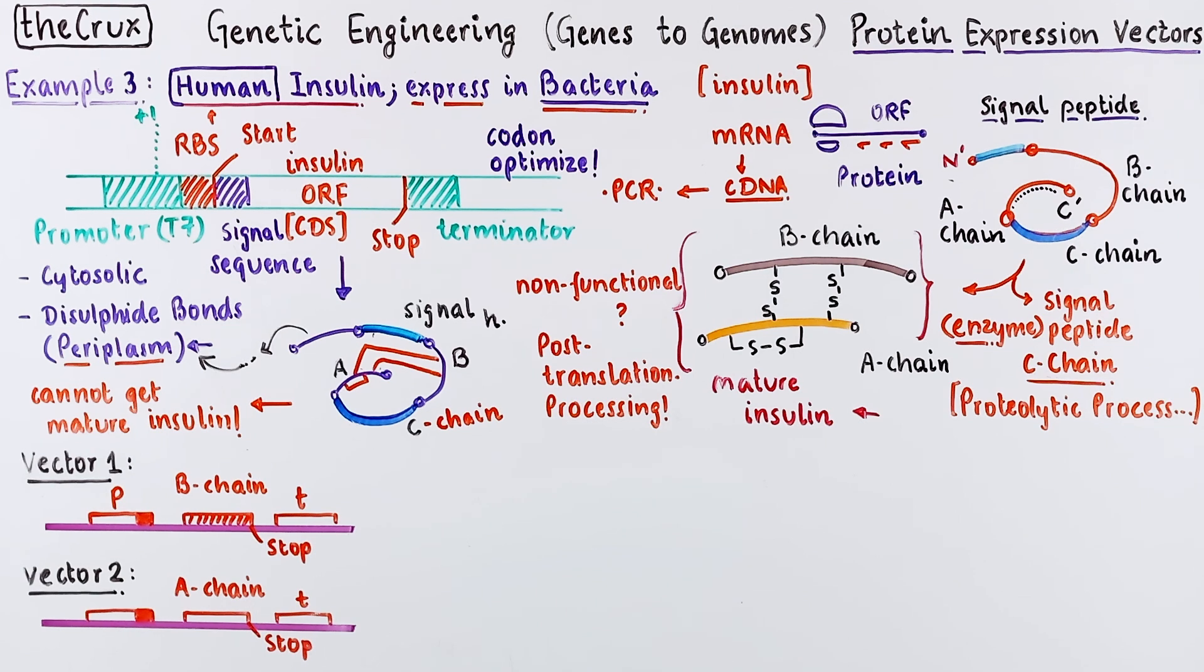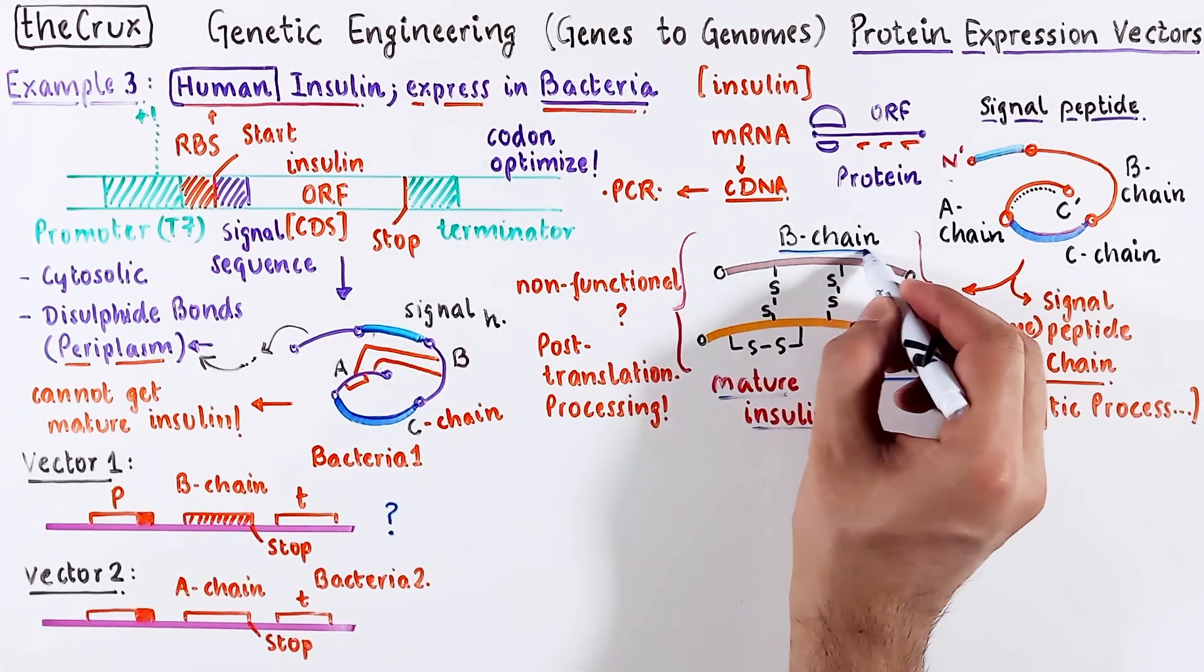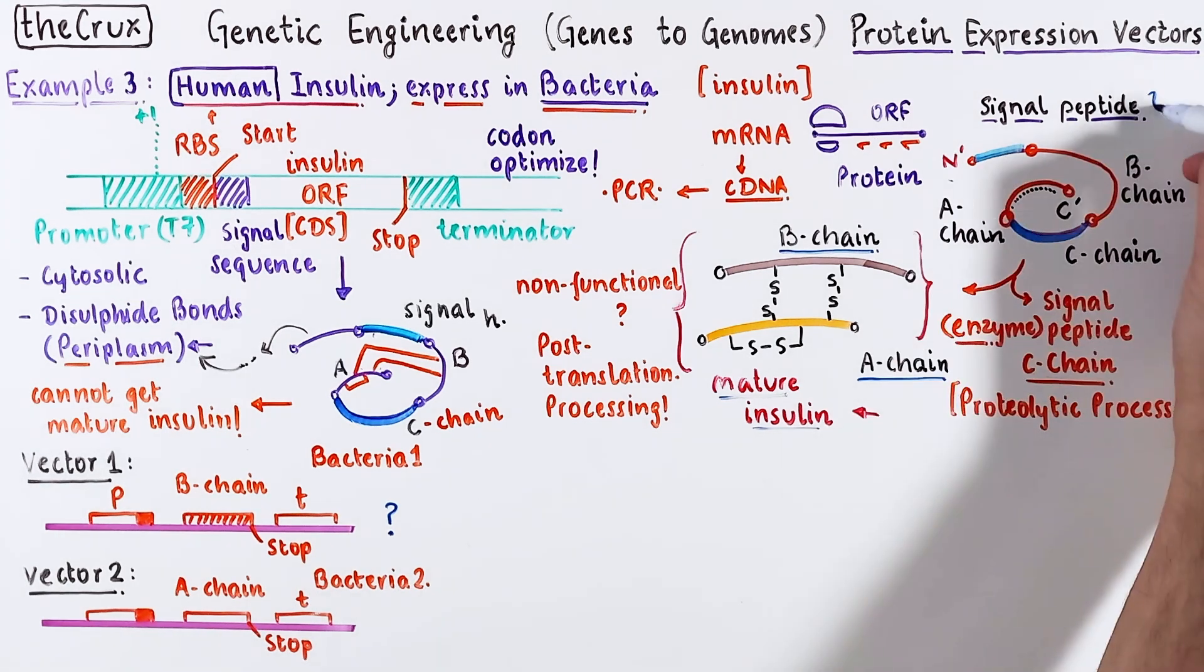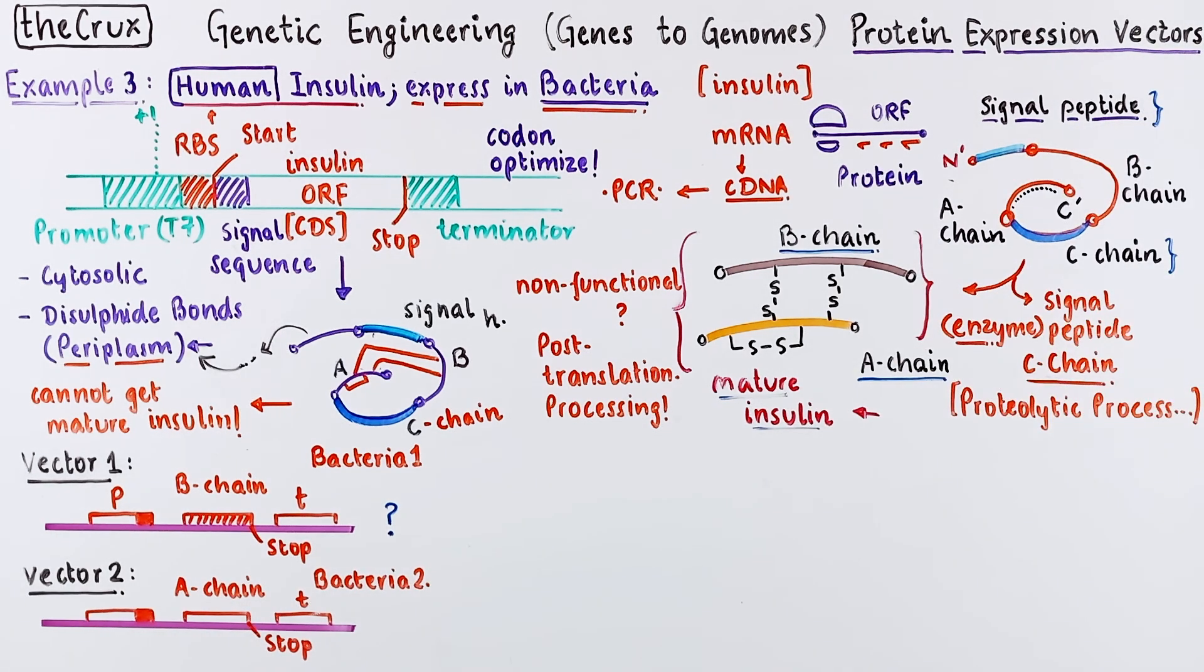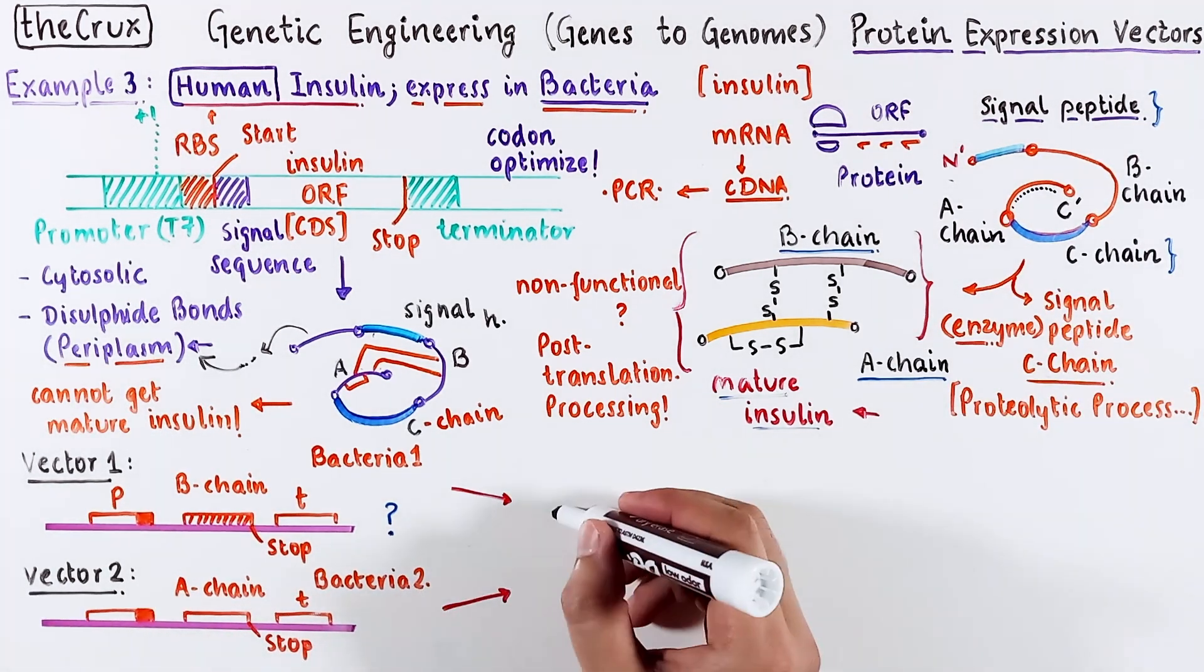Both these templates also get an artificial start codon. There are a few extra things that were engineered into this vector, but the partition of A and B-chain is the crux. The A and B-chain vectors go into separate bacteria. If you think this is weird, note that the mature insulin only has the A and B chains. The C-chain and signal peptide is removed, so technically, they are not part of the insulin.